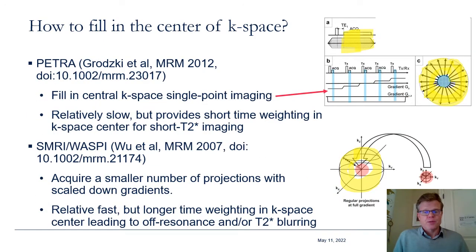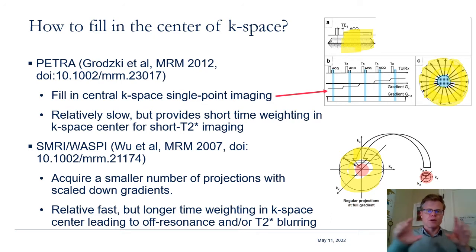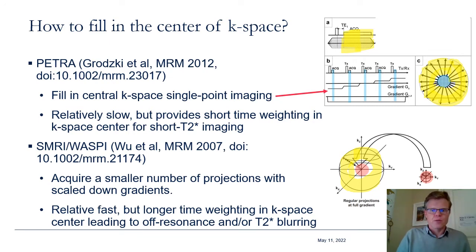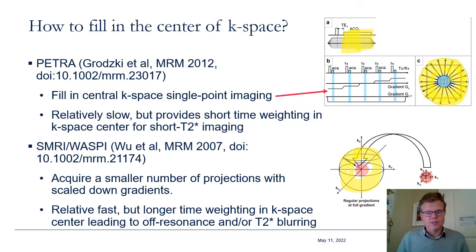There are a couple of popular and effective strategies for filling the center of k-space. One is called PETRA — a single point imaging technique. The outer region of k-space is filled with the radial projections already discussed, and to fill the center, we go point by point each TR, with each TR sampling just a single point of the central k-space region. A single point is relatively slow, but it provides very short TE weighting on the k-space center data, which is advantageous for short T2* imaging.